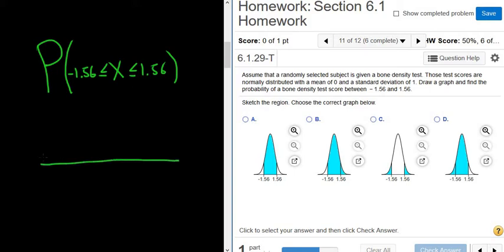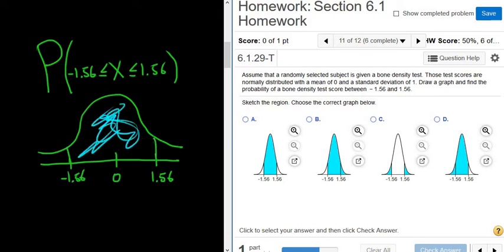If you were to graph this, here's the normal curve. 0 always goes in the middle because 0 is the mean, and the mean goes in the middle. Here's 1.56, and then here's negative 1.56. Then you would just draw lines at these, and then you would just shade everything between.